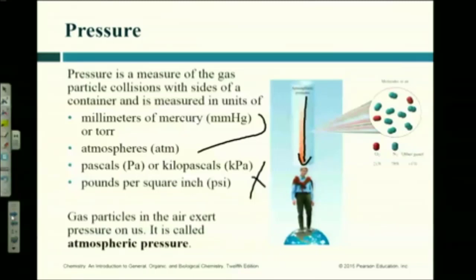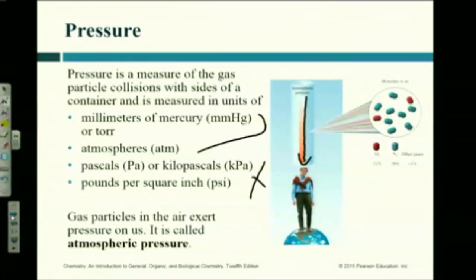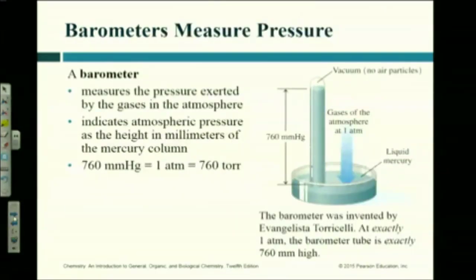Atmospheric pressure changes. If you watch the weather, they give atmospheric pressure — normally in inches of mercury, as opposed to millimeters of mercury. When atmospheric pressure changes dramatically, storms happen. Real low-pressure systems — like when it gets really intense — are called hurricanes or tornadoes. These are both examples of low-pressure systems where the air is rising and pressure is really low. So how do we measure atmospheric pressure? We have something called a barometer.